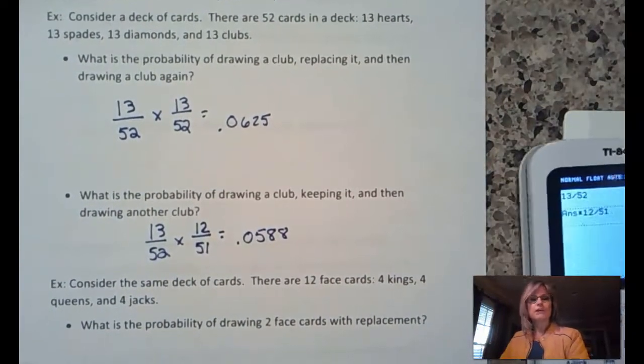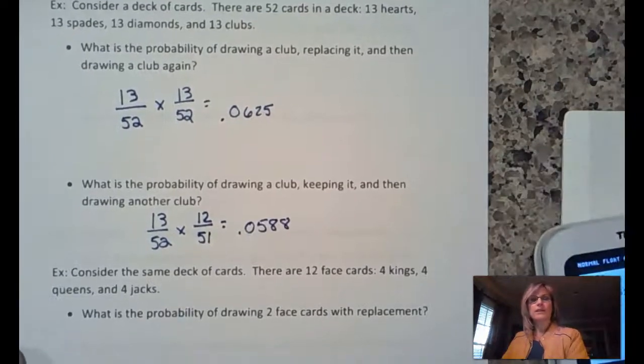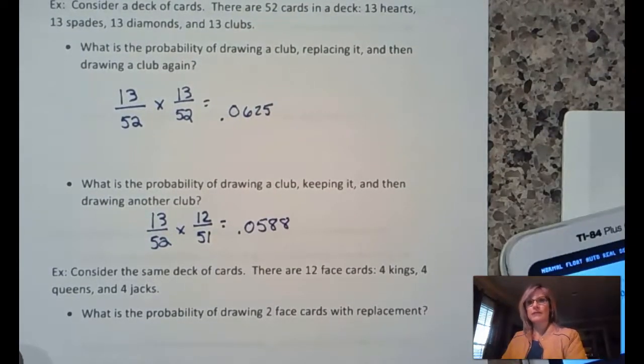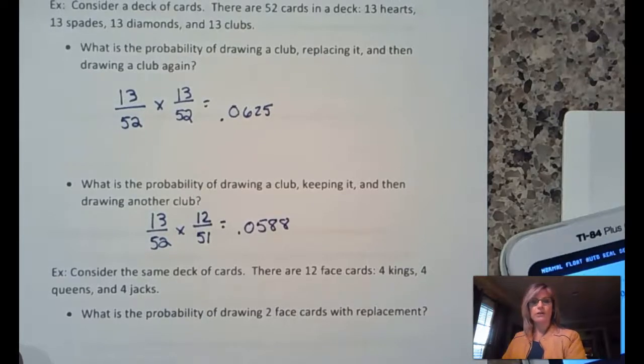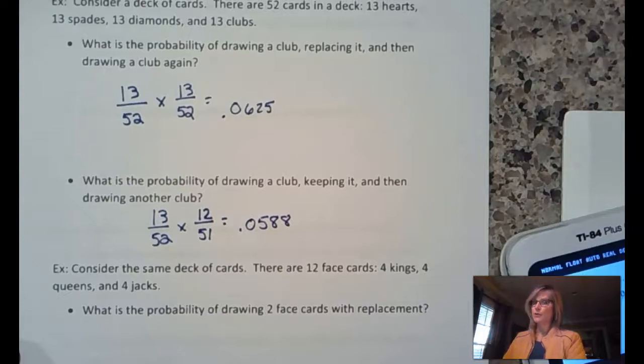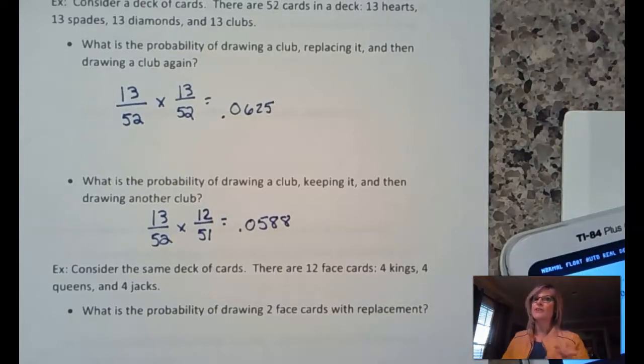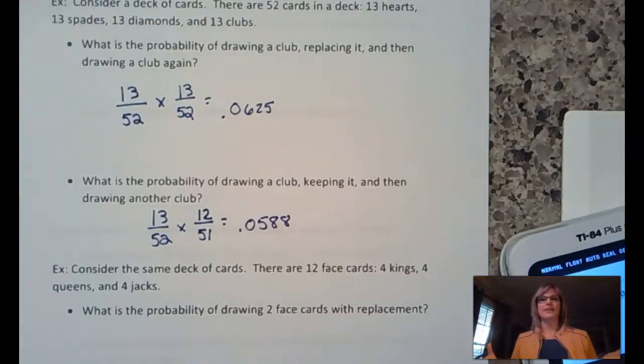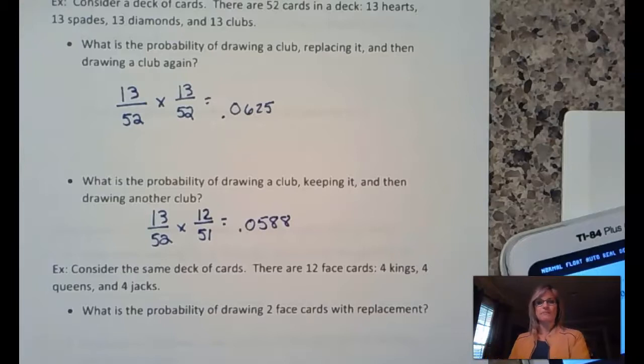We'll do the same thing with getting a face card. Now, out of 52 cards, there are 12 face cards. Four kings, four queens, four jacks. Aces are not face cards. You might get 15 points playing rummy with an ace, but it is not a face card because there's no face on it.